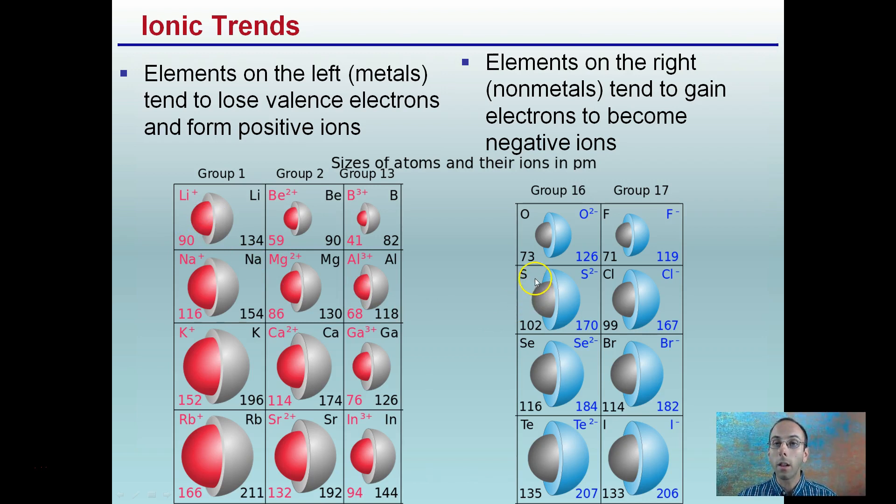In contrast, elements on the right side, the nonmetals, tend to gain electrons to become negative ions. You see here's our neutral atom in the gray, and when we're adding that negative electron, we can see that the radius is actually becoming larger in this case. Because here we're losing that outer shell, those outer electrons, becoming smaller. Here we're gaining more, and that's causing our radius to become larger in those ions. So cations, positive ions, tend to form smaller radius. Anions, or negative ions, tend to form a larger radius.